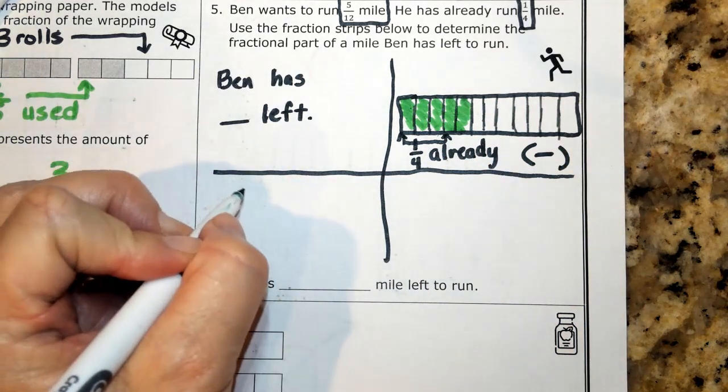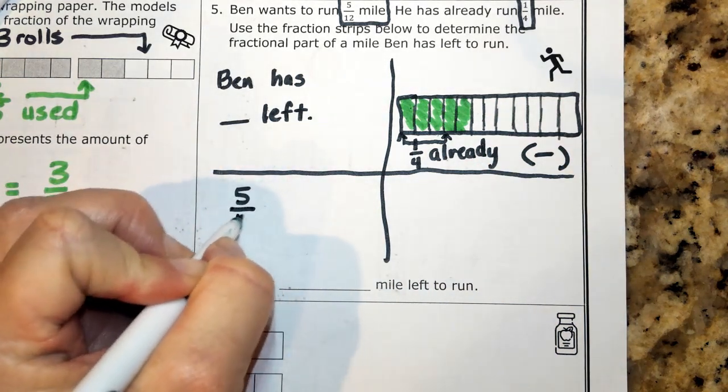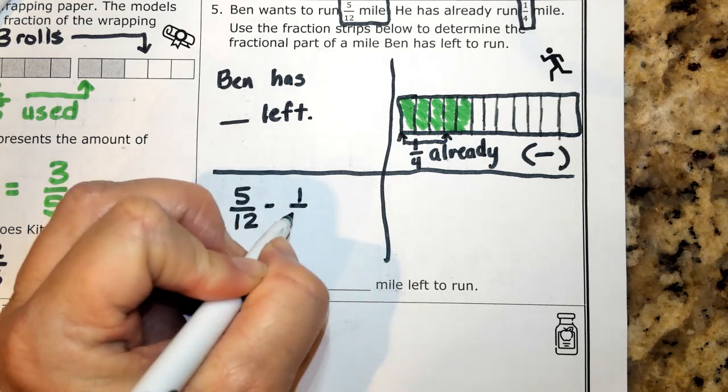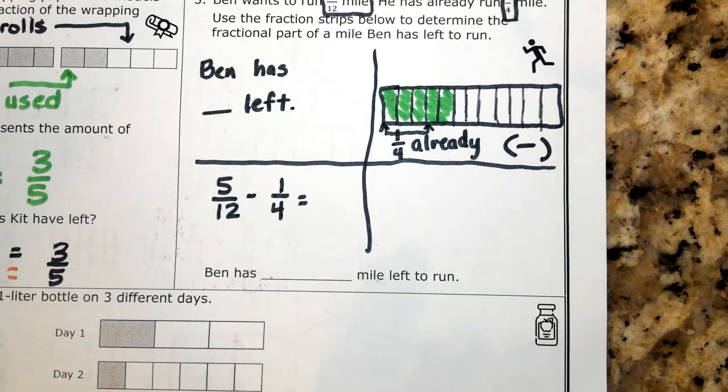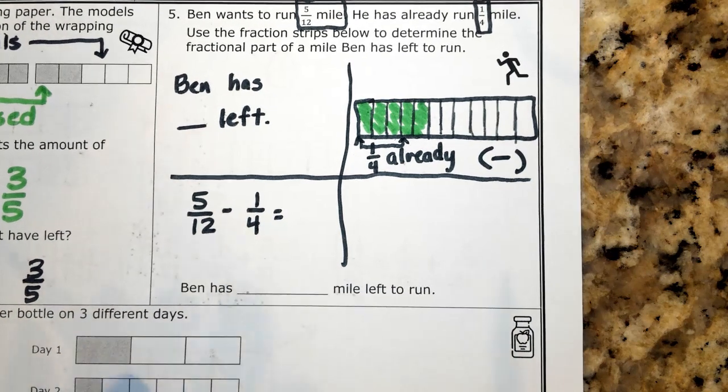So I'm going to set that up: 5 twelfths minus 1 fourth. Before I do that, I'm going to make a quick estimate. Remember, estimates will help us make reasonable decisions.